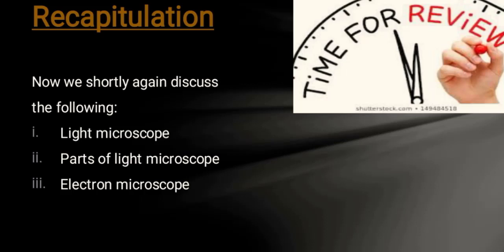To recall: we use the light microscope as an instrument to observe things which we cannot see with the naked eye. We use it to magnify the image to the original size. It uses a beam of light. The parts of the microscope include the eyepiece and objective lens.